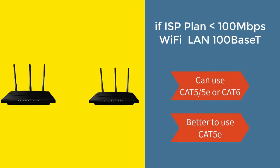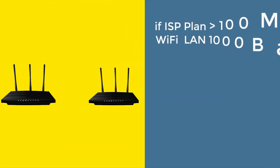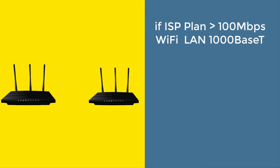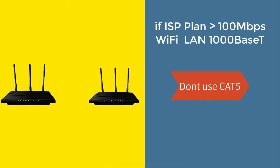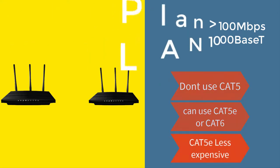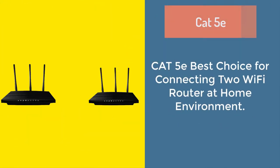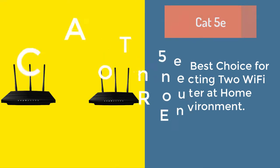And in the future, if you upgrade your ISP plan or wifi router, cat5e will still work. If your ISP plan is above 100 Mbps and your router LAN is 1000BASE-T Ethernet, then cat5 cannot deliver your full plan speed since it only supports 100 Mbps. In that scenario, use cat5e or cat6, which support 1 Gbps up to 100 meters. Overall, cat5e is the better choice for connecting two wifi routers in a home environment.